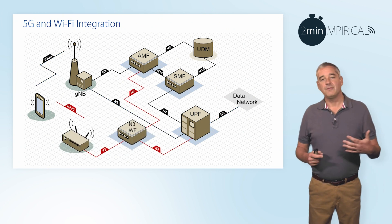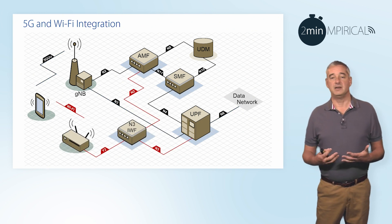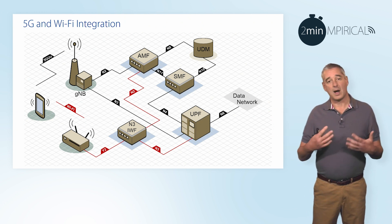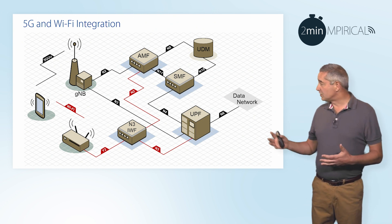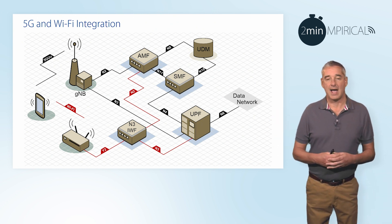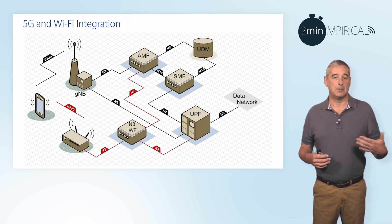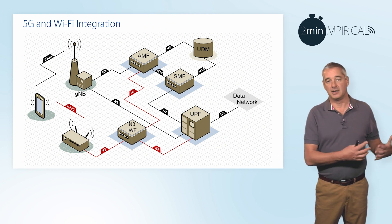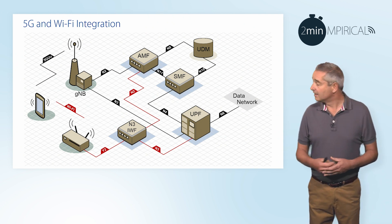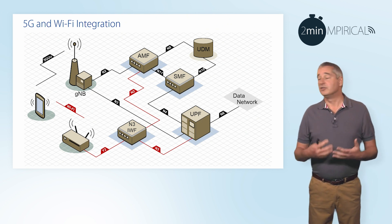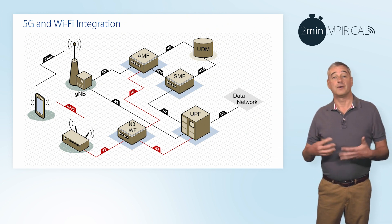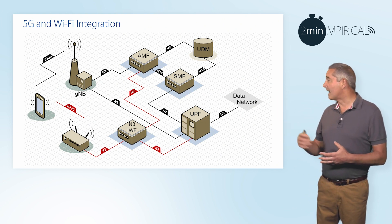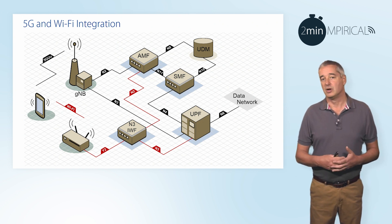If we add Wi-Fi, we can see that the 3GPP have already defined the ability to support interworking. Here on the diagram we've added the Wi-Fi access point, which connects back through to an N3IWF — a Non-3GPP Interworking Function — the name derived because Wi-Fi is not defined by the 3GPP. From the N3IWF we can connect back into the 5G core: the UPF for throughput of data, and the AMF, the Access and Mobility Management Function, for control.